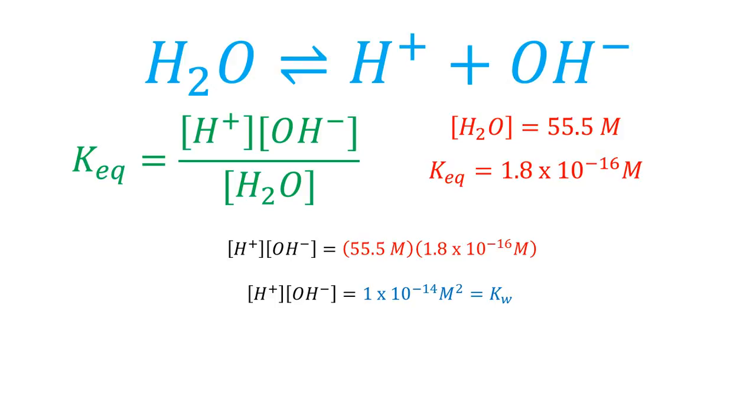If an aqueous solution has more hydrogen than hydroxide ions, it is an acidic solution. If the opposite is true, it is a basic solution. If both ions are equal in concentration, the solution is neutral. Pure water is always neutral.